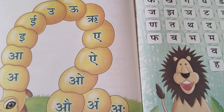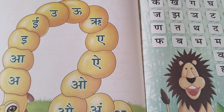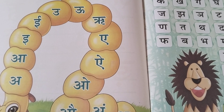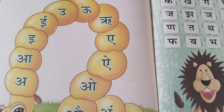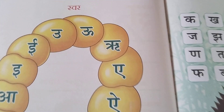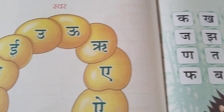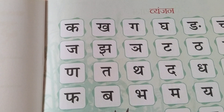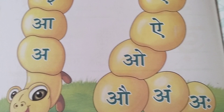Hello kids! Let's learn Hindi alphabets. So just like English, we have vowels and consonants in Hindi. Vowels are called Swar and consonants are called Vyanjan. So let's start Swar.